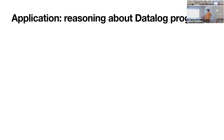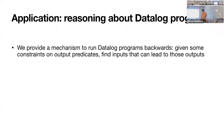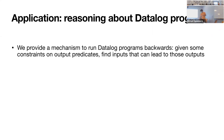Another potential application is reasoning about datalog programs. Now that we can write SMT formulas that refer to predicates defined in datalog, we can start asking interesting questions. Like with the reachability example, we're essentially running our datalog program backwards — saying given these reachability requirements, what input facts could lead to them? A use case is: if you have some safety property of your datalog program, you can state its negation as an SMT formula and try to find a model of it, which would be a counterexample to that safety property.